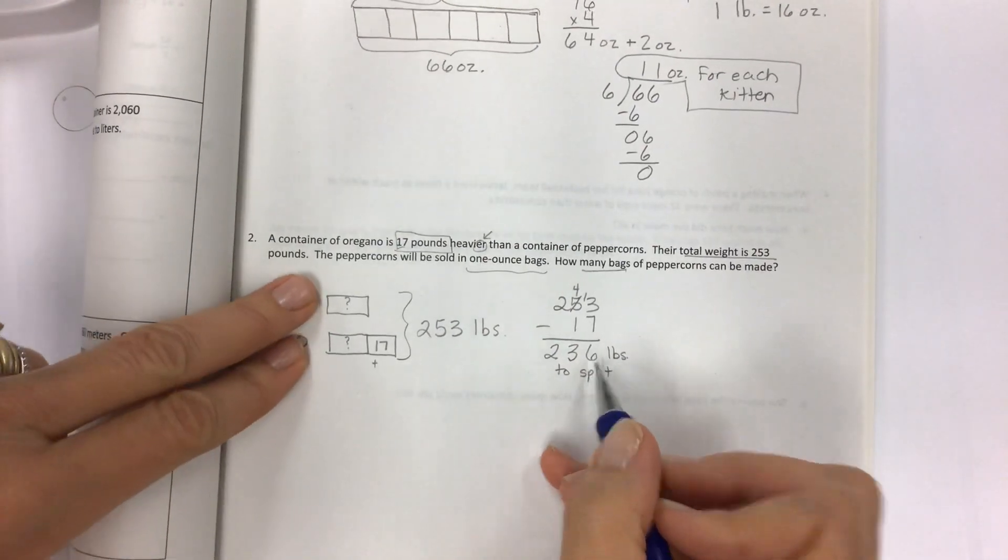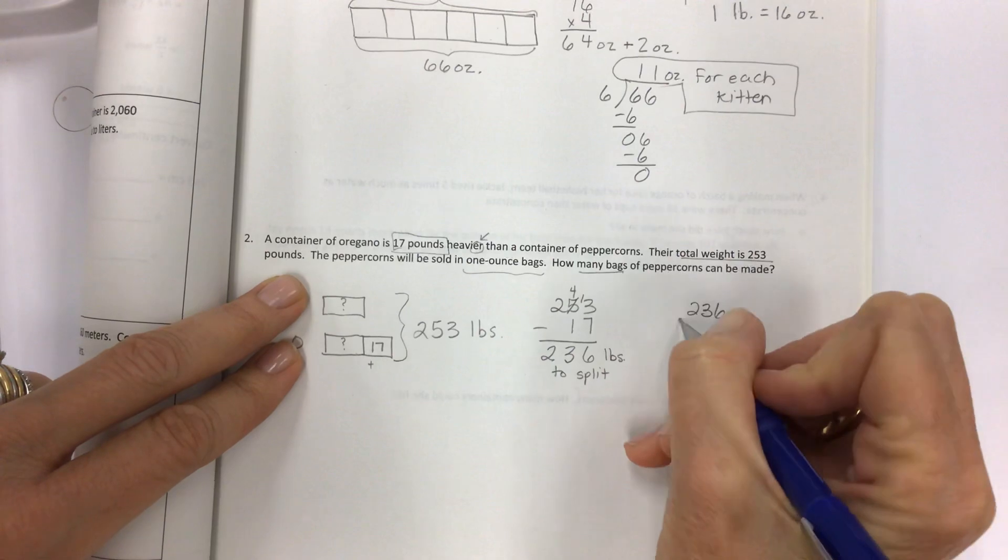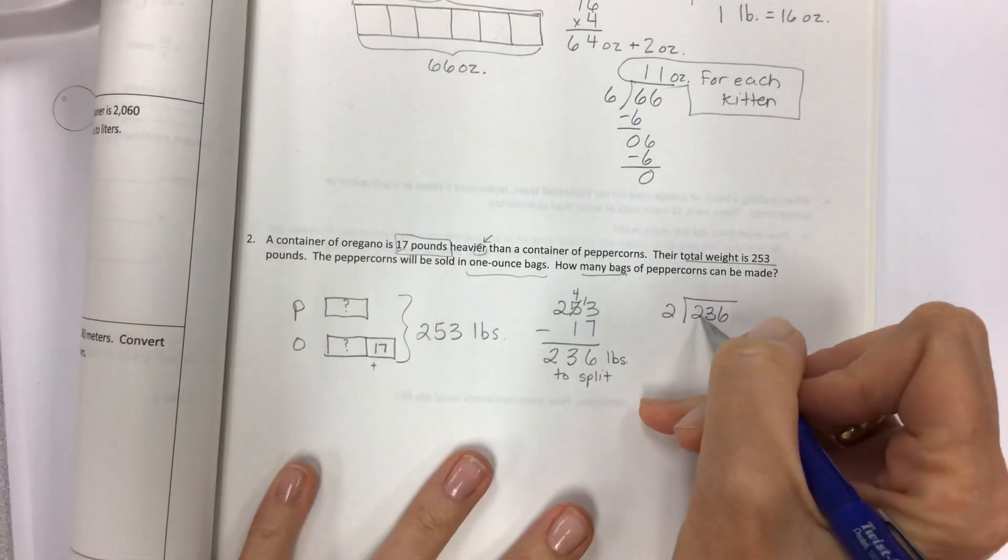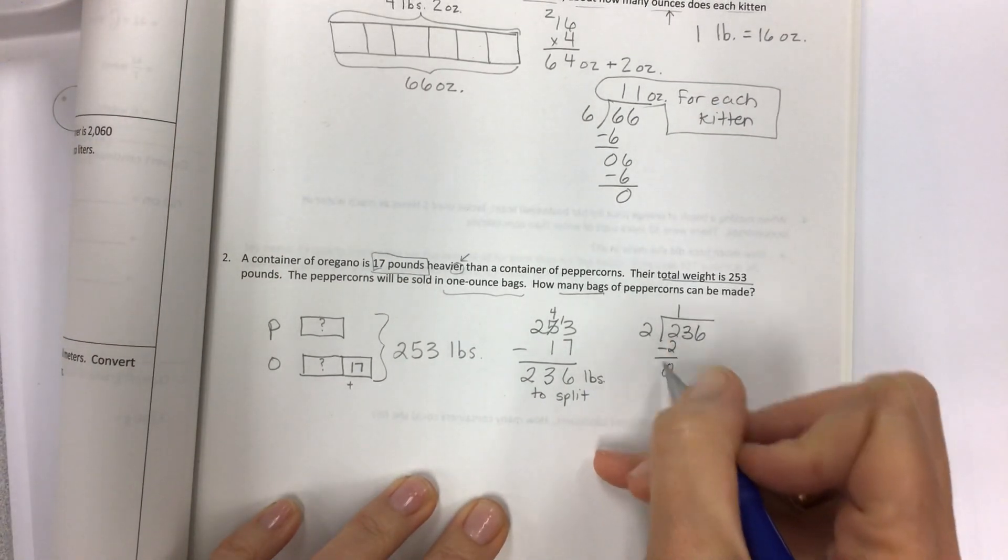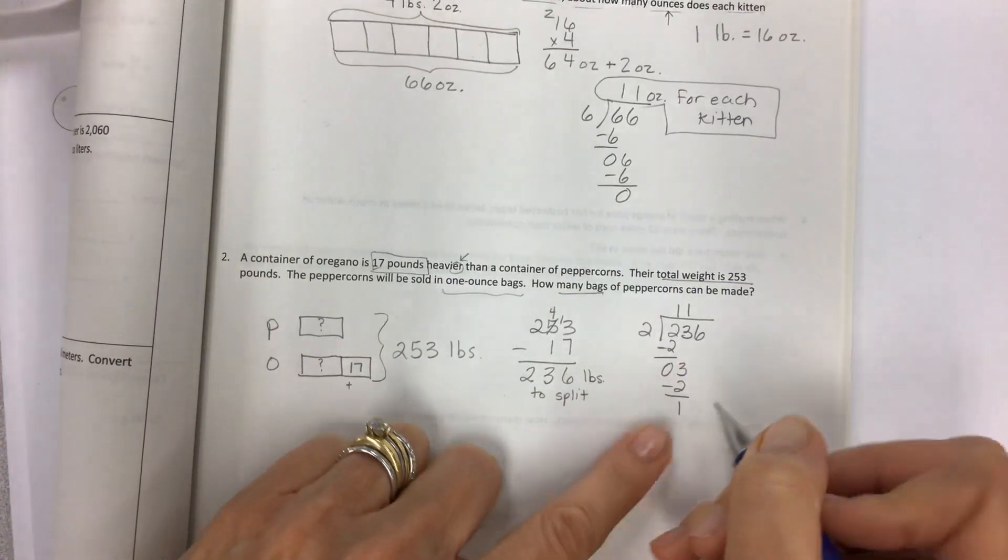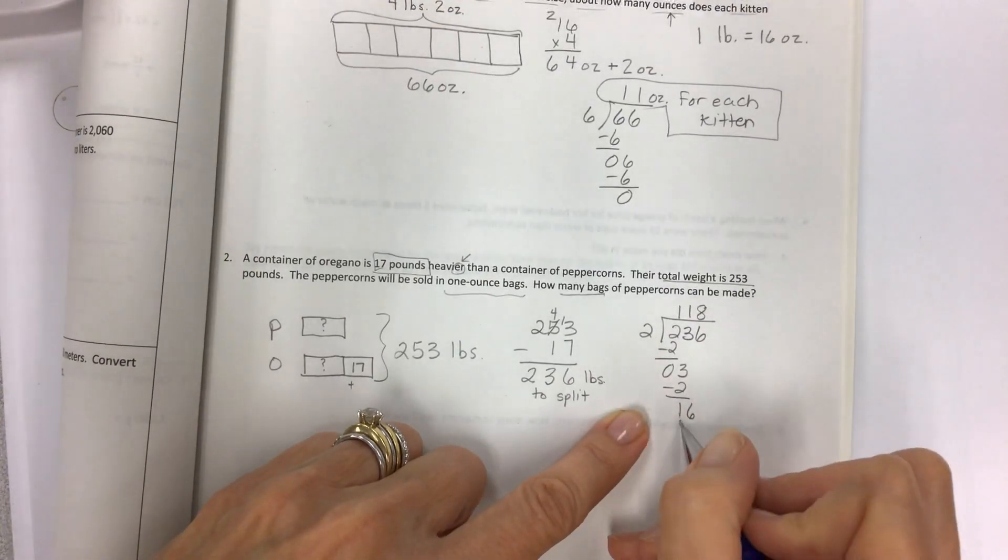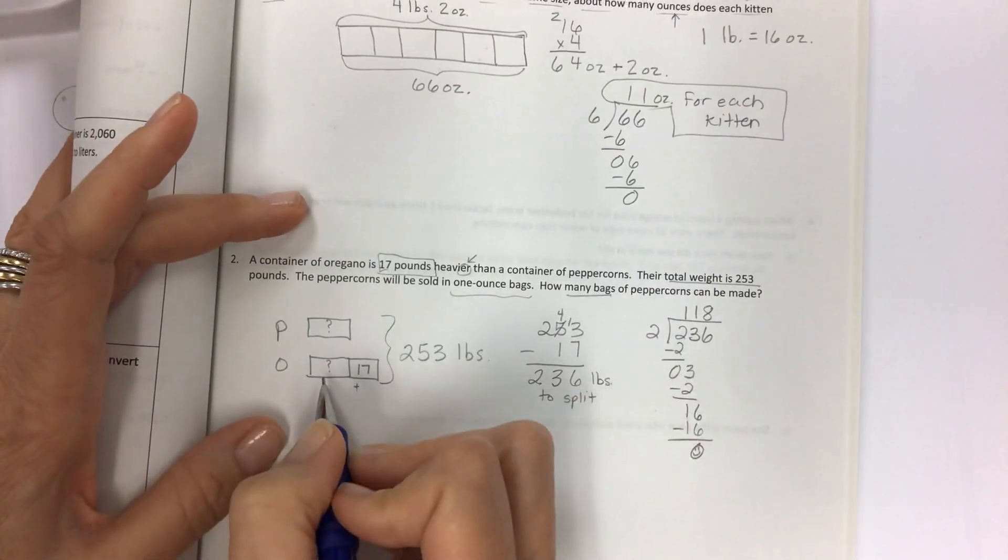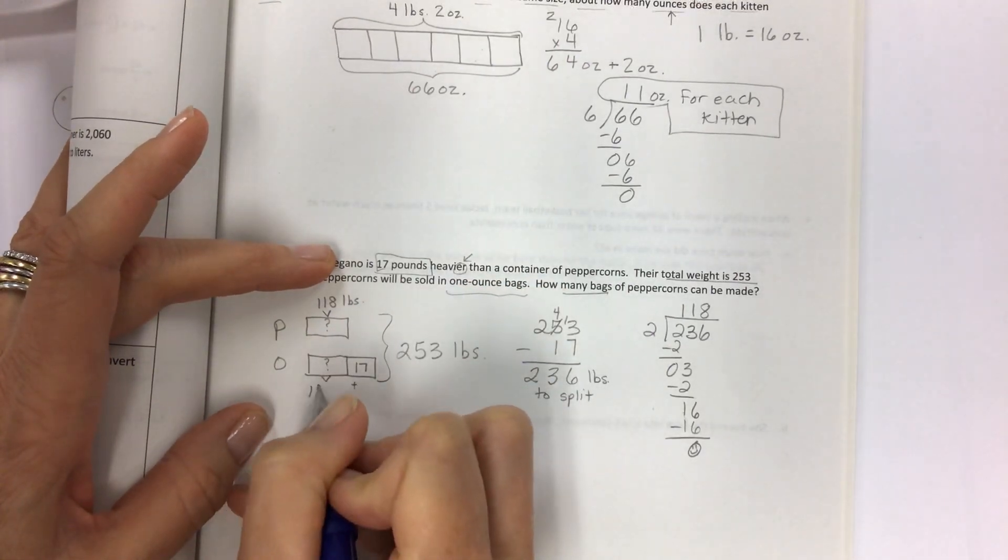So let's get the total that is going to be split between these two. So 253 minus 17, 13 minus seven is six, four minus one is three, and bring down the two. And so this is the 236 pounds to split. Now I have an even number, 236. I have 236 to divide by two. Now once I divide this 236 that's left by two, I'm going to have the amount for each one. Working through the division: 2 divided by 2 is 1, 3 divided by 2 is 1, 16 divided by 2 is 8. So each one of these is 118 pounds. And I would never have figured it out when I was a kid without a tape diagram.